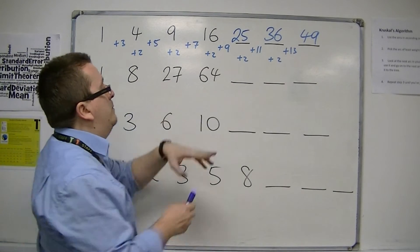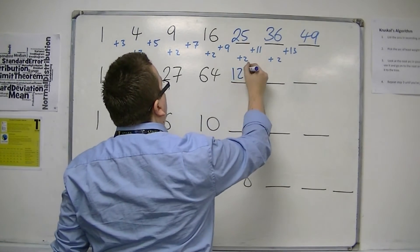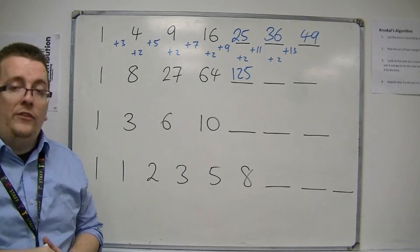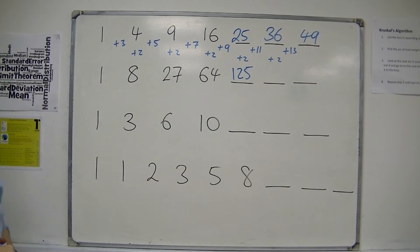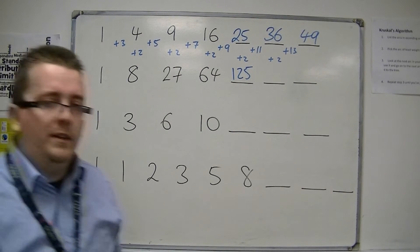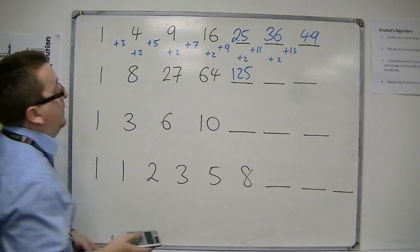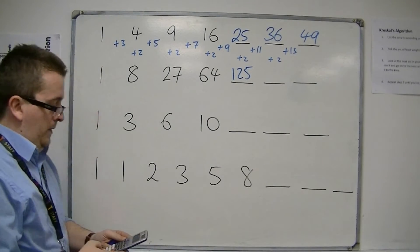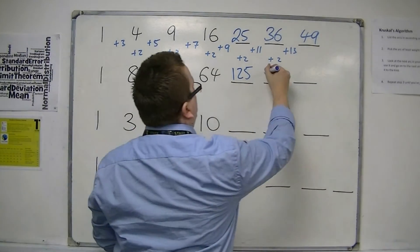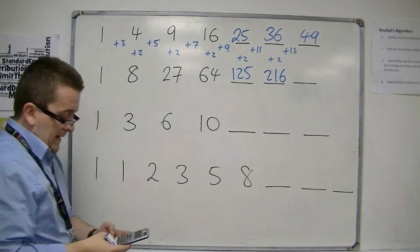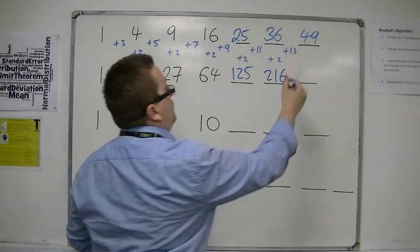So the next one's 5 cubed, and that's 125. Now the next one is 6 cubed. So I can spot a calculator over there. So I'm just going to steal it. See, good job, I'm prepared. So 6 cubed should be 216, not one I keep in my head regularly.